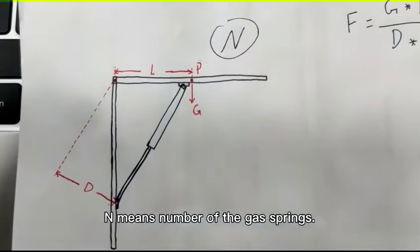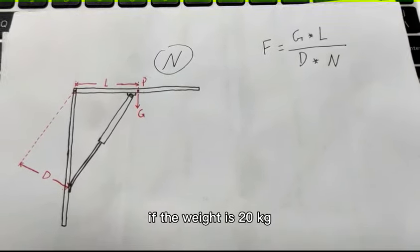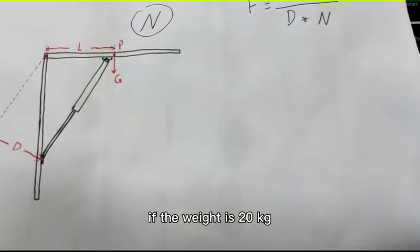N means the number of the gas springs. Now, let's take an example. If the weight is 20 kg.